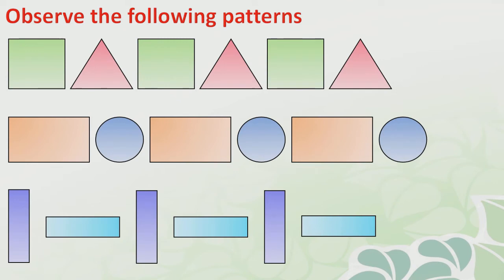Observe the following patterns. You can see here a few patterns with some shapes. The first shape is square, then triangle, then again square, then triangle. You can see a series of shapes here — the pattern follows. So again, we have to draw which shape comes next. After triangle, that is square. In this way, the pattern follows.